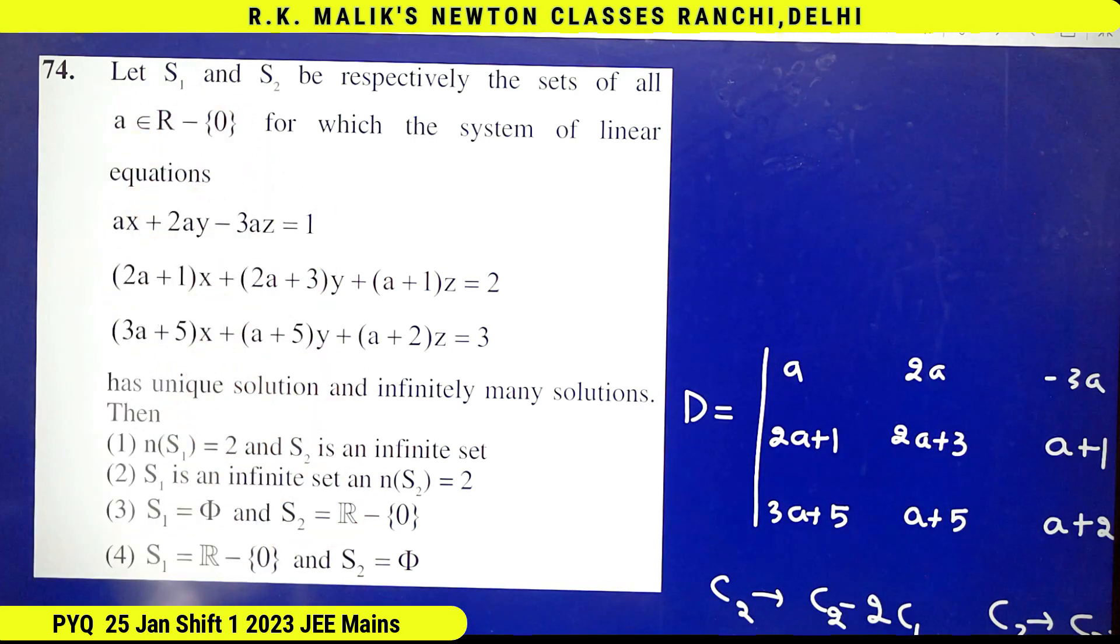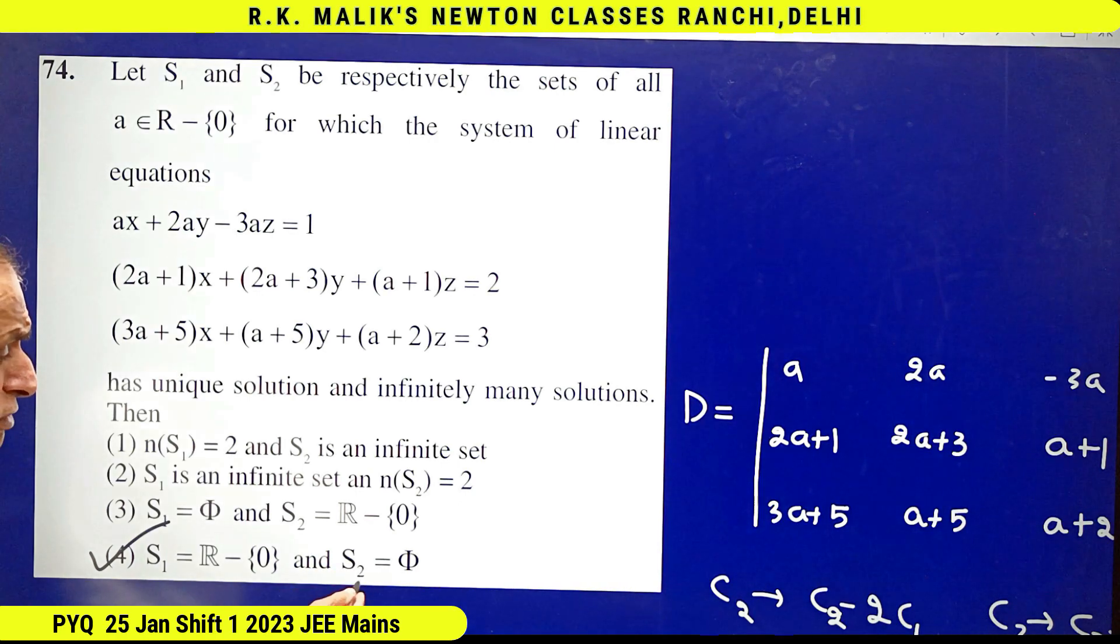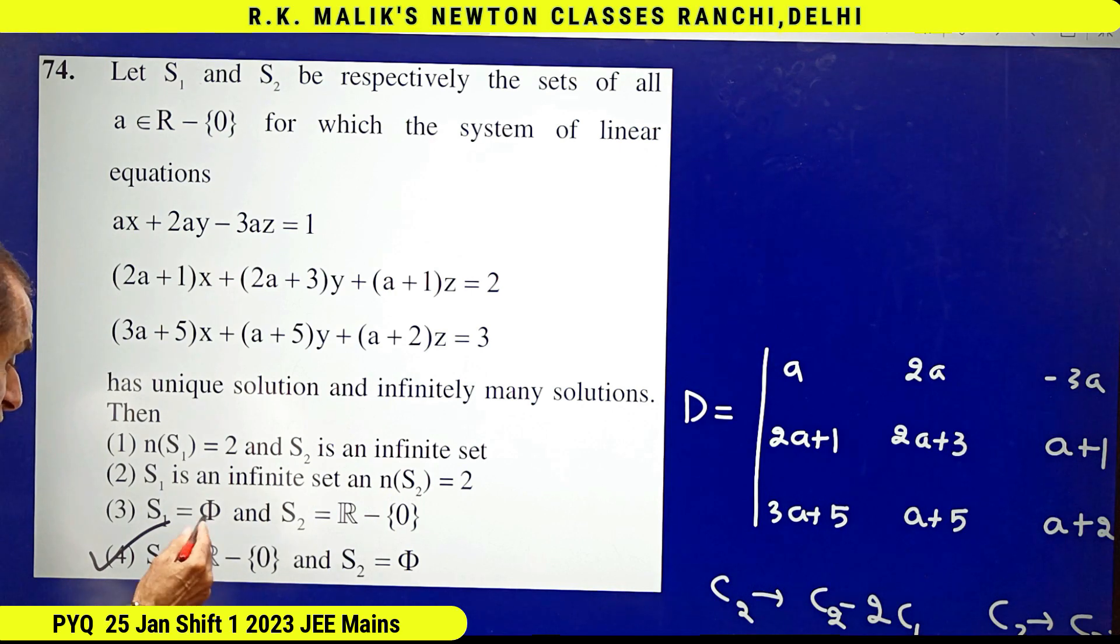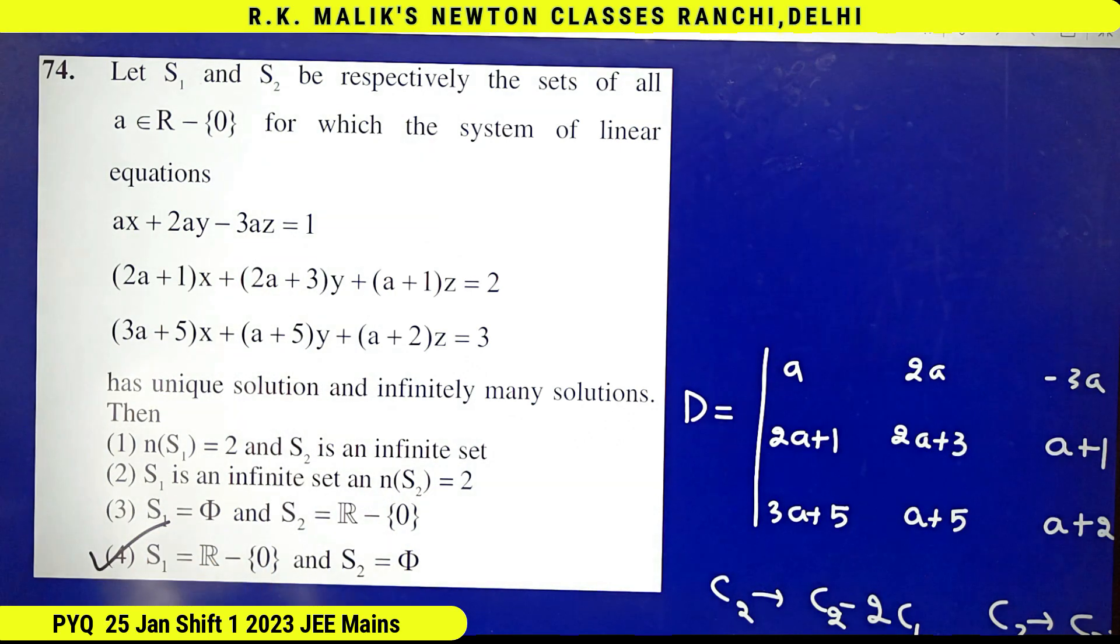Hence I can say for all these values of a, there will be a unique solution. Hence the fourth choice is the correct choice. Note that S₂ was the set of values of a for which the equations had infinite number of solutions. S₁ was the set of values of a for which these equations had unique solution.